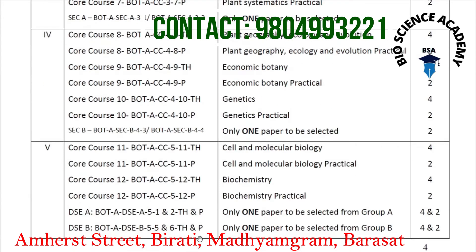In the fifth semester, there are only two core course papers — core course 11 and core course 12 — and there are two DSE papers, DSE A and DSE B.